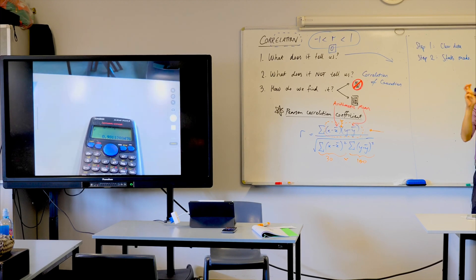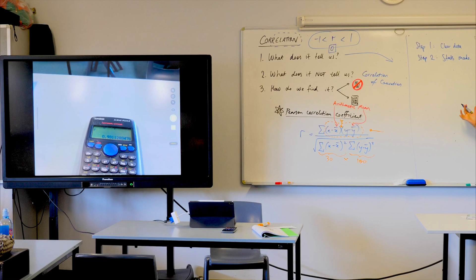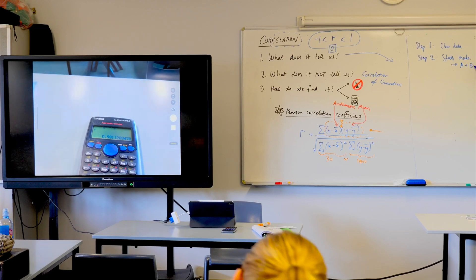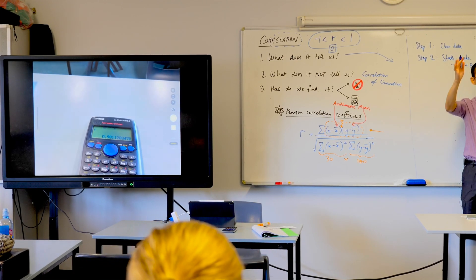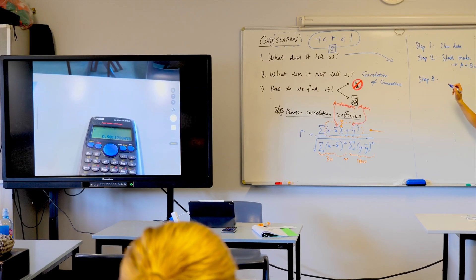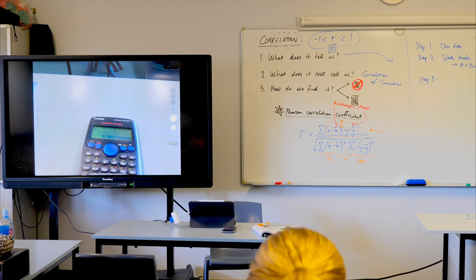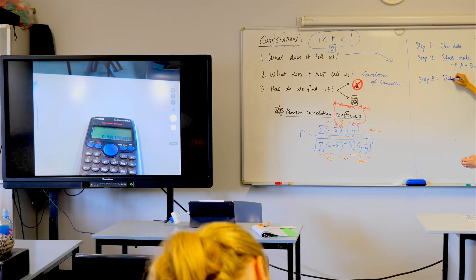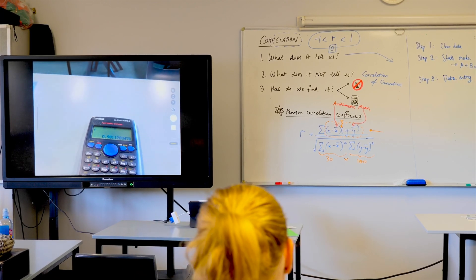When you're in stats mode, there's a bunch of different stats modes. You know, we're usually in one variable mode, but we don't want one variable mode. We want bivariate data. What was the thing that said bivariate data? A plus BX. So, let's just write that down as a little sub point there. Okay? Once you hit that, bam, you get your columns up. What was our step once we did that, when we saw the columns? What are we putting there? Our X and our Y. So, enter your data. Okay? Do a bit of data entry. Step four.